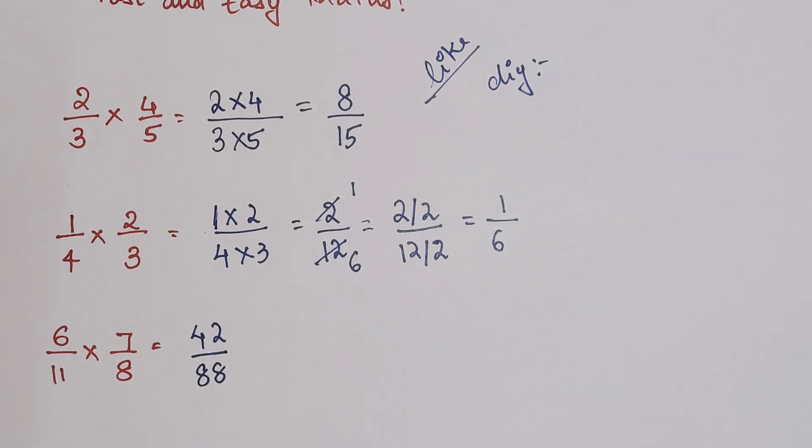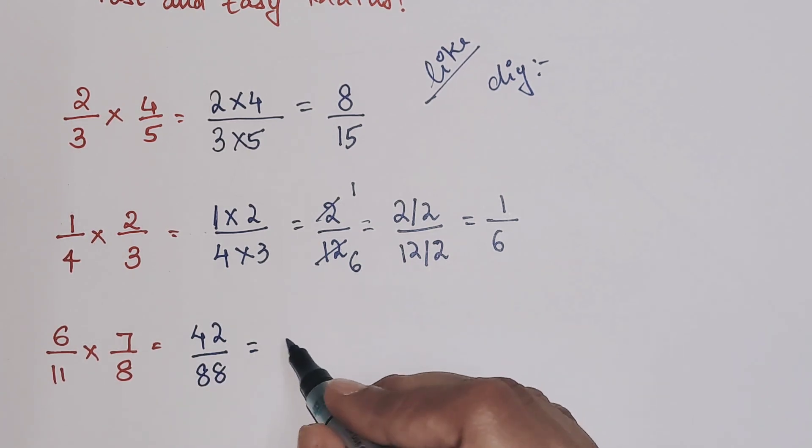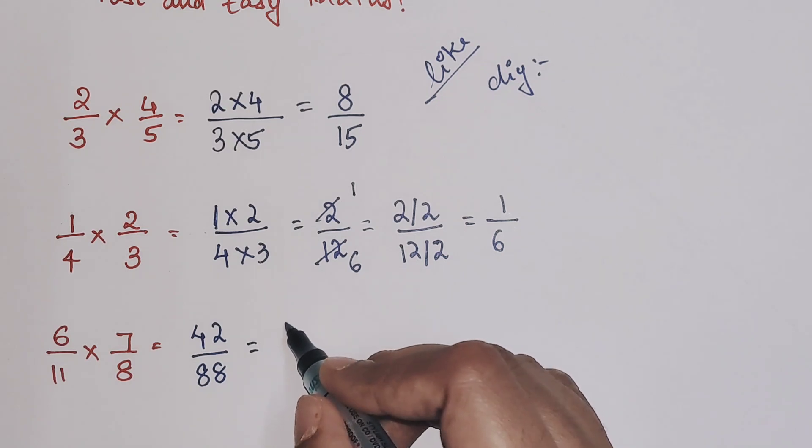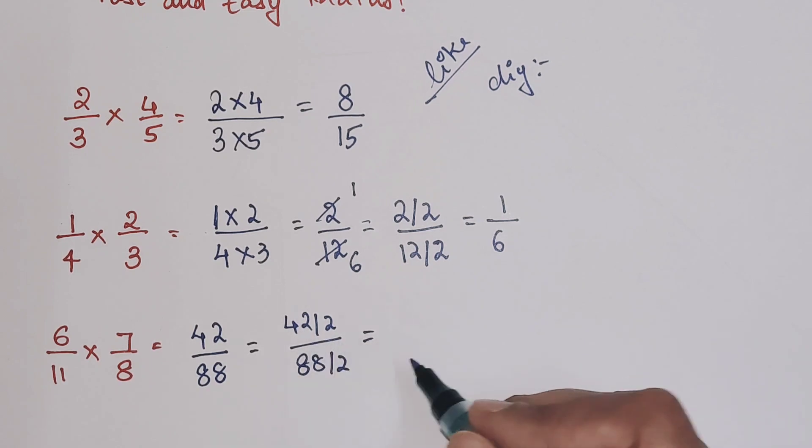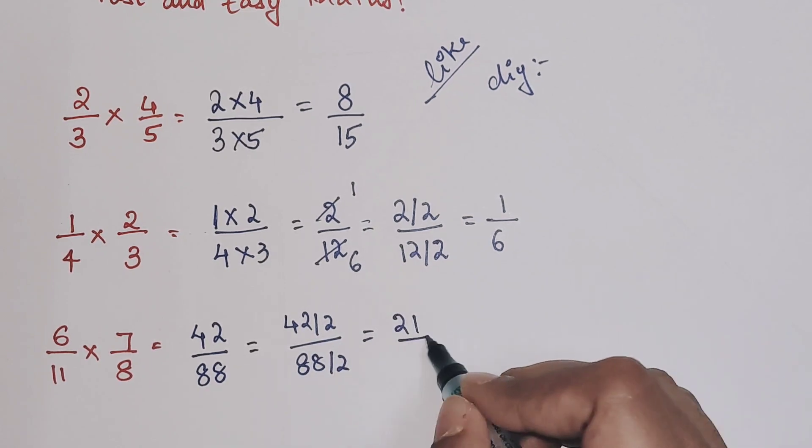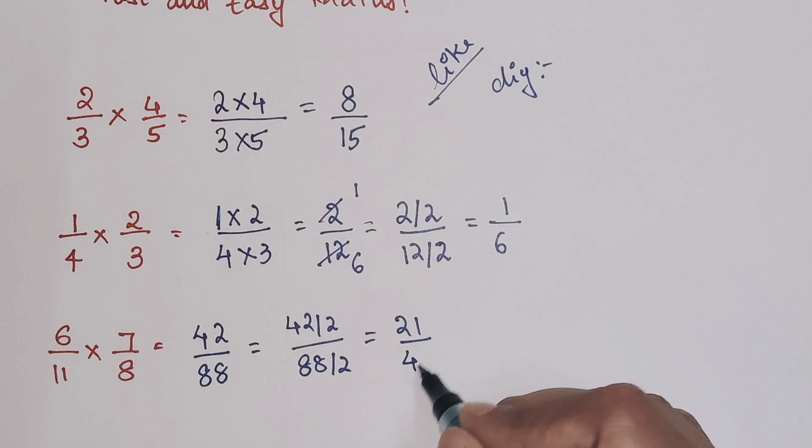Now both of them are even numbers. So again I will divide both of them by 2. So 42 divided by 2 and 88 divided by 2. 42 divided by 2 gets you 21, and 88 divided by 2 gets you 44.